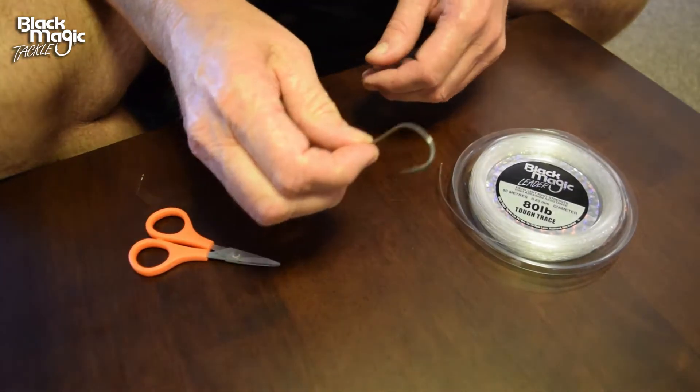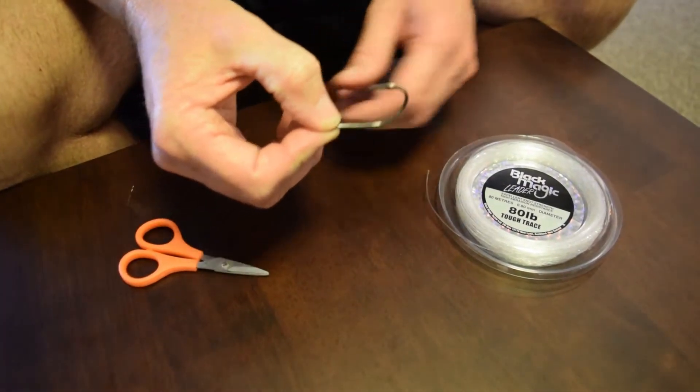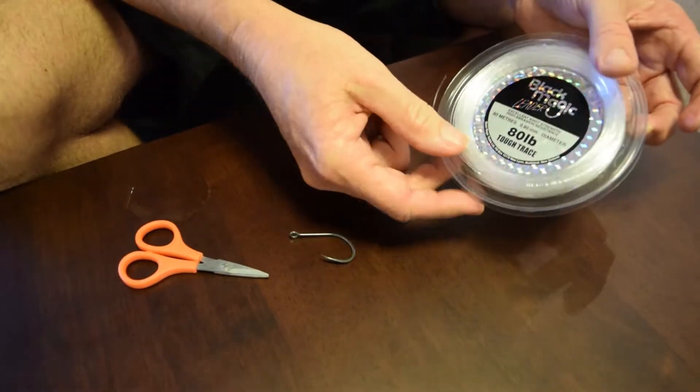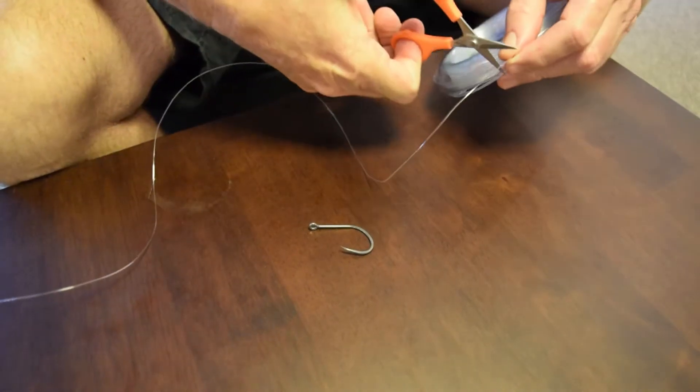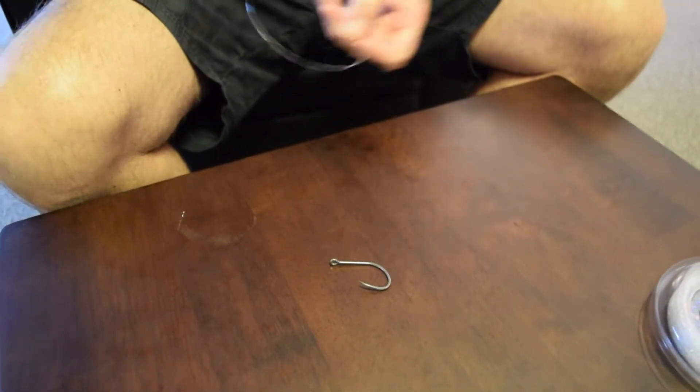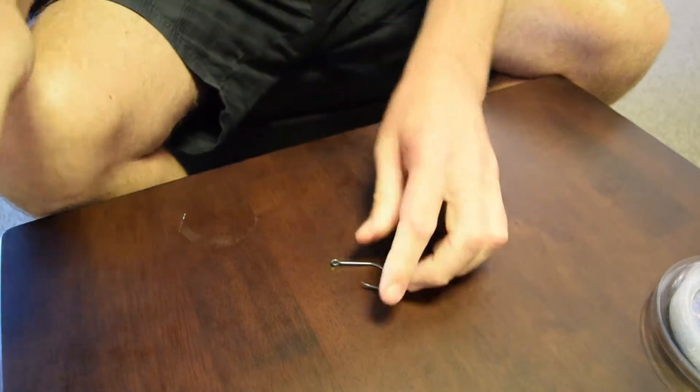Okay, today we're going to tie a snell knot using a Blackmagic DX point hook and some 80 pound tough trace. I'm just going to cut a little bit of this trace off and let's tie our snell knot.